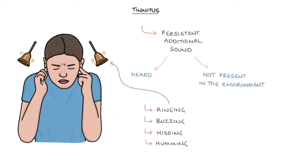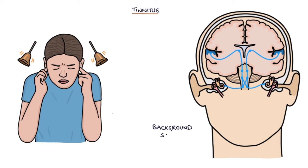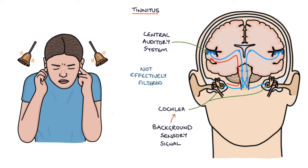The additional noise experienced with tinnitus is thought to result from a background sensory signal produced by the cochlea that's not effectively filtered out by the central auditory system. In a quiet enough environment, almost everyone will experience some background noise or tinnitus. This becomes more prominent the more attention it's given.